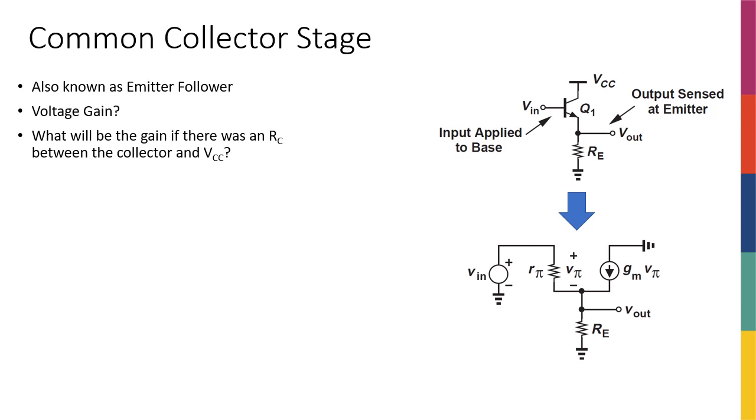Sometimes we call this the emitter follower, simply because as you will see in this topology, the emitter is following the voltage at the base. So it's kind of like a voltage buffer. The emitter is really the follower. That's why if it's common collector, a lot of times people call it emitter follower.